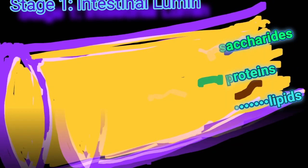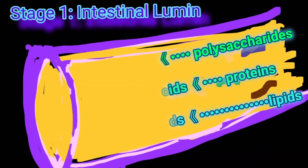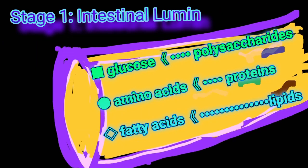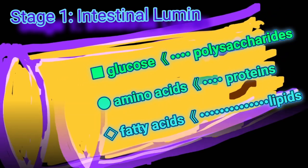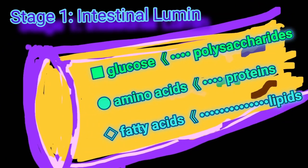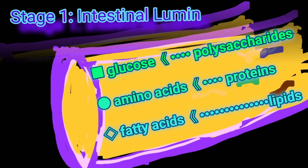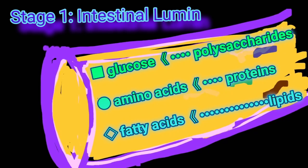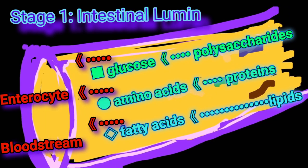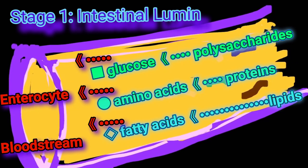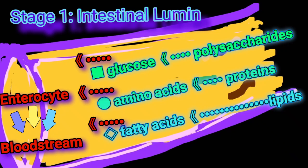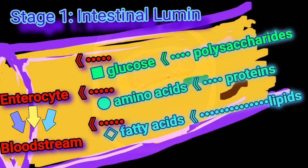There are three stages of catabolism. Stage one, which occurs primarily in the intestinal lumen, involves the digestion of dietary components — polysaccharides, proteins, and triacylglycerols — into their building block components: glucose, amino acids, fatty acids, and monoacylglycerol respectively. Glucose and amino acids are picked up by the enterocytes and released into the bloodstream, whereas digested lipids are reassembled into a chylomicron, a triacylglycerol-rich molecule, and then released into the bloodstream.